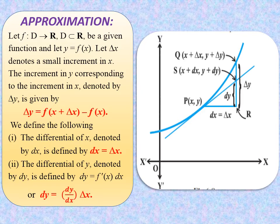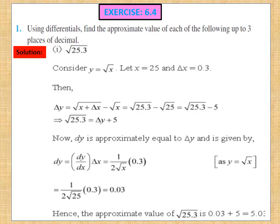So keeping these points in mind, let's begin with the exercise. It's a very small exercise. We have to simply find delta y in nearly all the cases. Question 1 of exercise 6.4: using differentials, find the approximate value of the following up to 3 decimal places. The first one is √25.3.